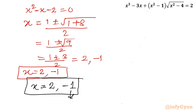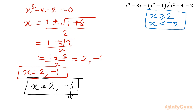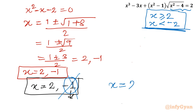Let us verify whether they are extraneous or not. We calculated that x must be greater than or equal to 2, or x must be less than -2. Now -1 is greater than -2, so it is not less than -2 — we will reject this solution. That is why we calculated the domain condition: x² - 4 ≥ 0. So the overall final solution is x = 2.